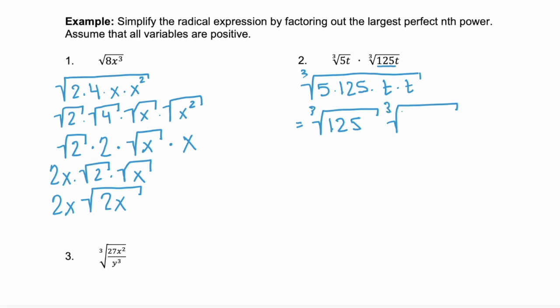We can break it apart into different radicals based on what we can and can't take the cube root of. We can take the cube root of 125, so let's separate that out. I can't take the cube root of 5 or t squared, so I'll leave that alone. Then the cube root of 125 is 5, and we're just left with the cube root of 5t squared.